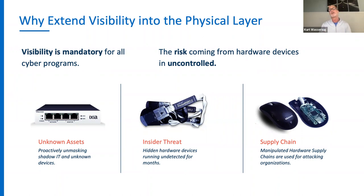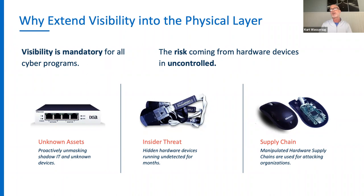Third use case — supply chain or insider threat. EDR solutions like CrowdStrike and Carbon Black use vendor ID and product ID to whitelist or blacklist devices. A Microsoft mouse uses a vendor ID and product ID saying 'I'm this device.' But security requires trust but verify. With a device embedded with a Raspberry Pi — supply chain or insider threat — it has a digital existence at layer one, which can decipher the difference between a true Microsoft mouse and something that has been manipulated.